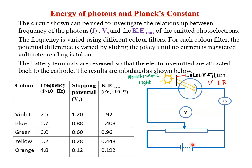Here is a table of results with colors — violet, blue, green, yellow, and orange. When the frequency of the incident radiation is 4.8, the stopping potential is around 1.2. When we increase the frequency to 5.2, the stopping potential increases to about 0.28. An increase in frequency leads to an increase in stopping potential.